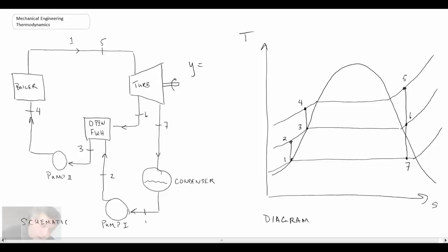And it'll be a little y and it is going to be equal to the mass flow rate at 6 divided by the mass flow rate of fluid going into the boiler at 5.